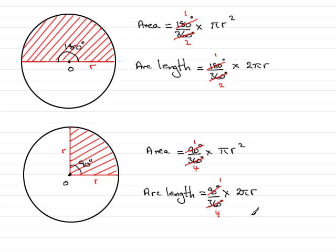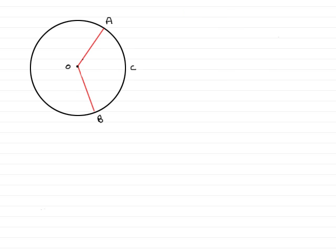So we now have a method of trying to find out the area of these two particular sectors. And so we're just going to now look at finding out the area and arc lengths of sectors with other angles other than the 180 degrees and 90 degrees. So I'll just remove these two diagrams and we'll put this one in.